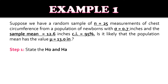For step one, we state the null hypothesis and the alternative hypothesis. The null hypothesis is: mean equals 13. The alternative hypothesis is: mean is not equal to 13. Since we use the not-equal-to symbol for the alternative hypothesis, this is a two-tailed test.